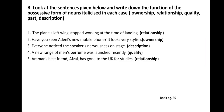So the first sentence is: the plane's left wing stopped working at the time of landing — that is relationship. Second: Have you seen Adil's new mobile phone? It looks very stylish. This is ownership, because Adil's phone belongs to Adil — so this is ownership.